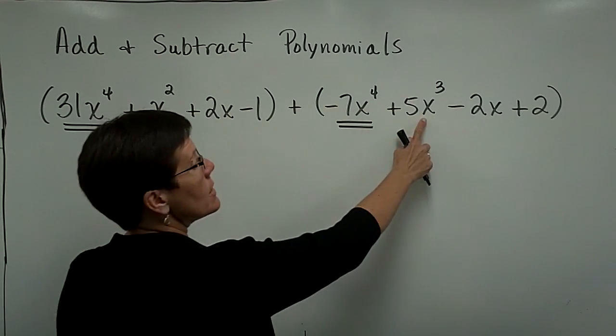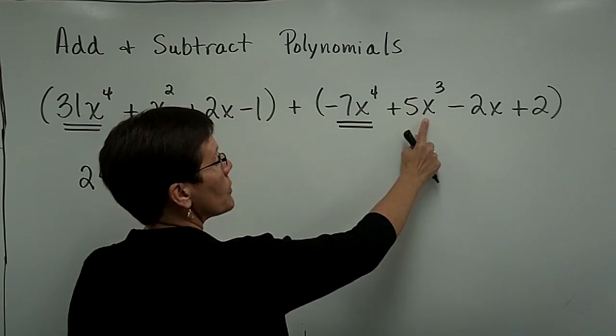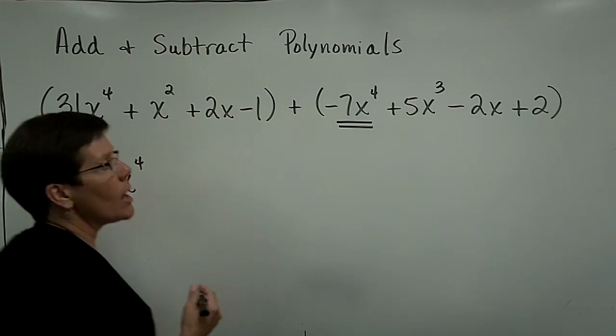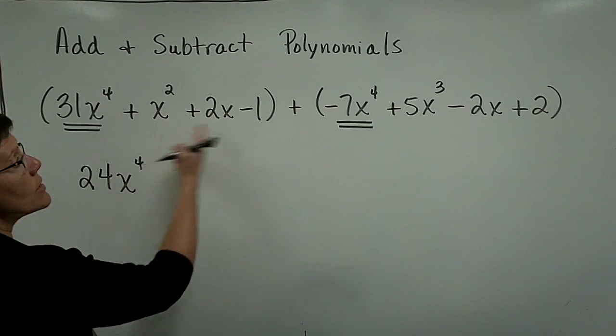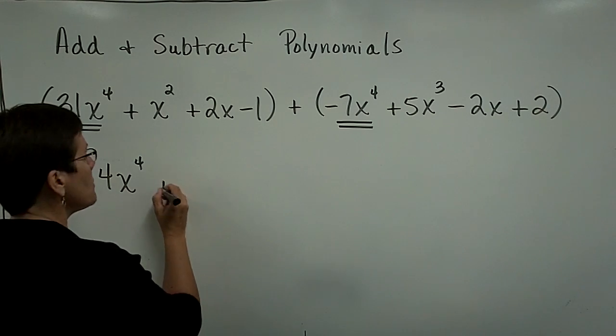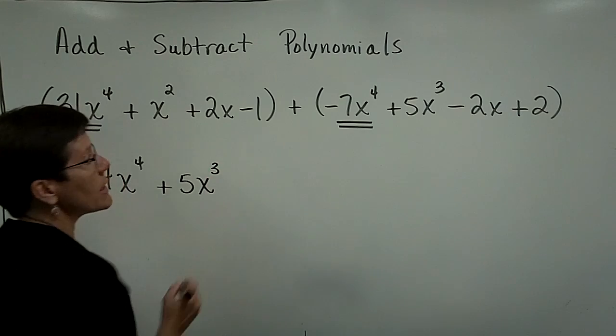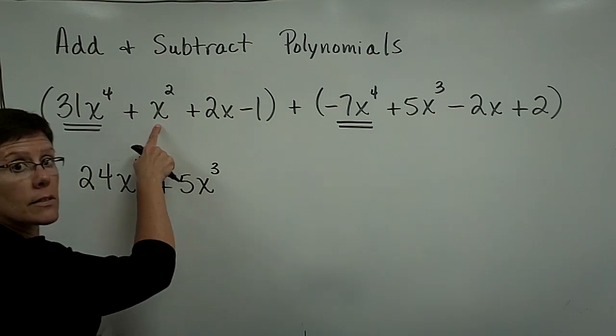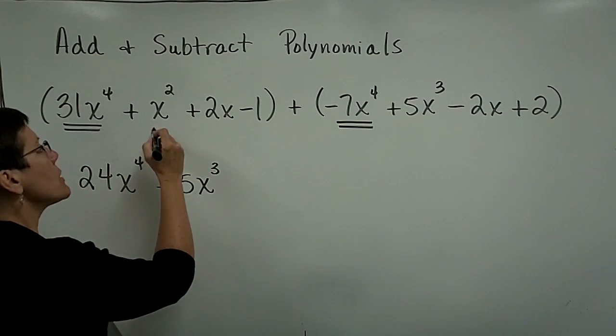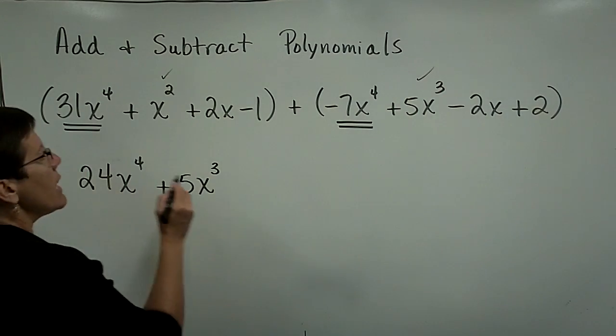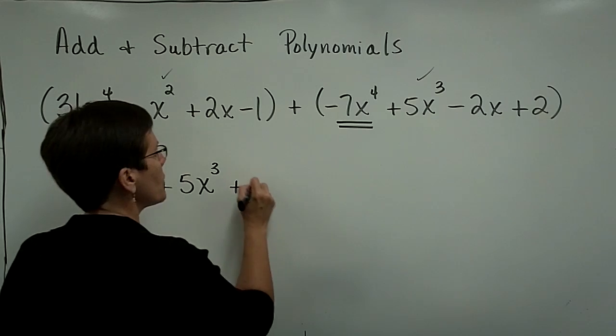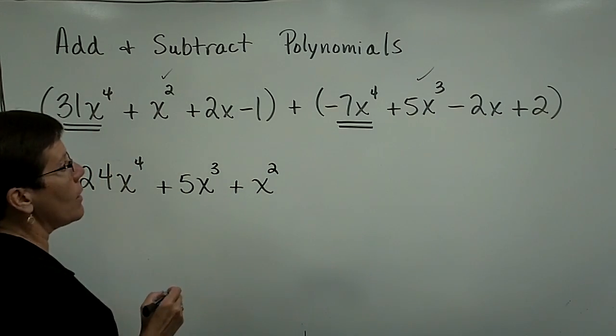As I look down through the rest of these, my x cubed term over here is the next term in terms of descending order of degree. And there is no x cubed term here, so I'm just going to bring that 5x cubed down as part of my answer. Next is x to the 2nd power. I'm going to put a little check mark above these as I take care of them. And there is only one term with x to the 2nd power, so I have to bring that down as well.